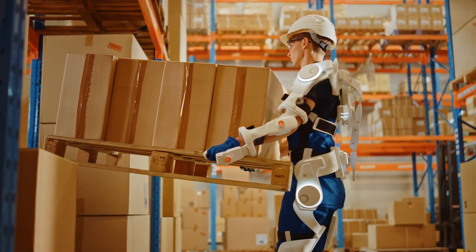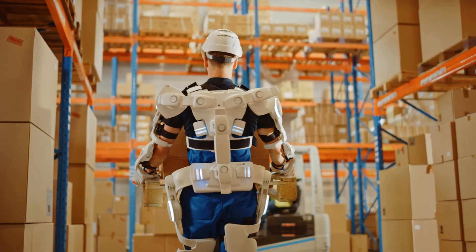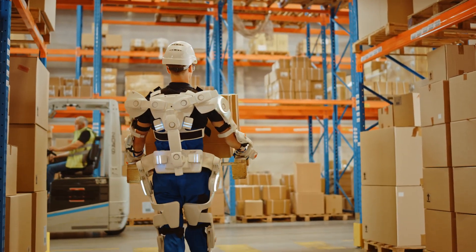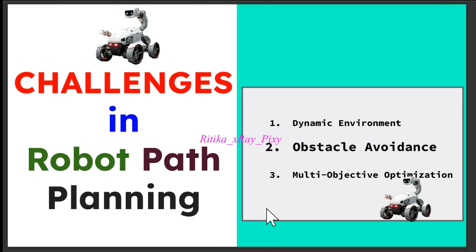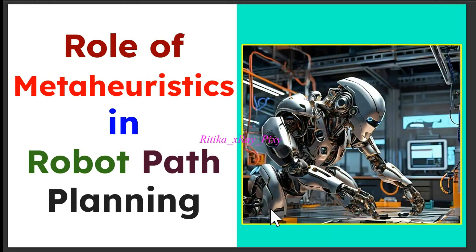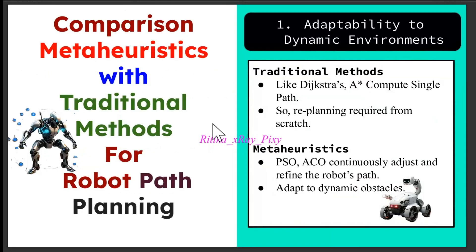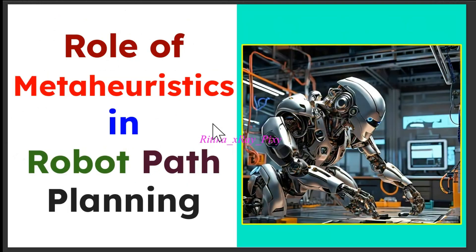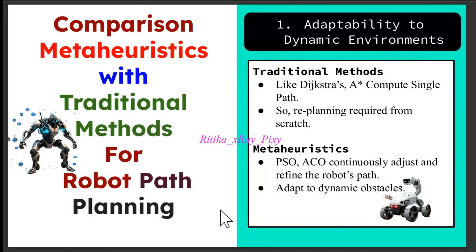When doing path planning for the robot we have to account for both fixed and dynamic obstacles so the robot can move without any collision. The third challenge is multi-objective path planning, where the robot needs to optimize multiple factors like energy consumption, speed, and safety when planning its route. These challenges indicate the need for advanced algorithms like metaheuristic optimization algorithms, which ensure efficient and adaptive path planning in complex environments.